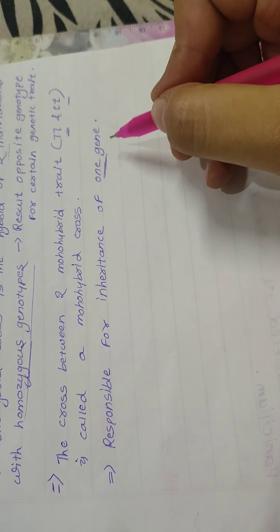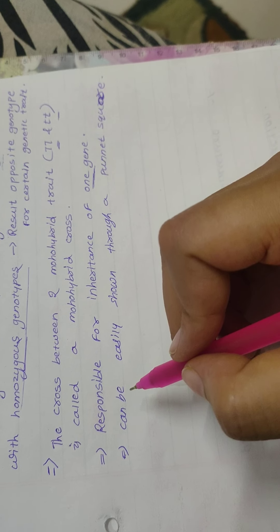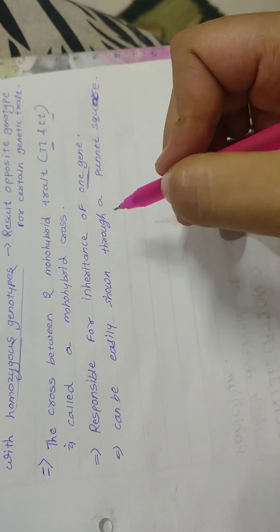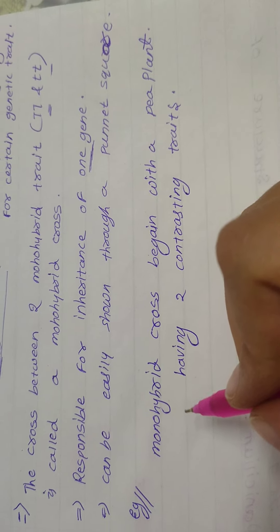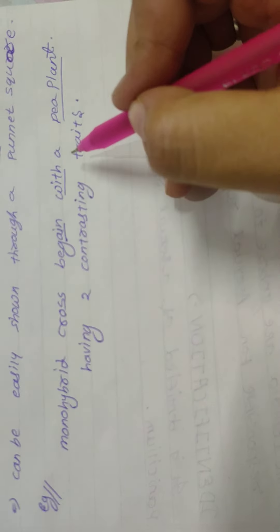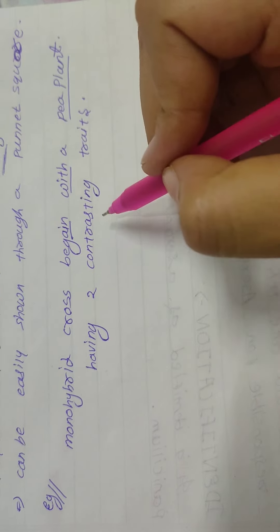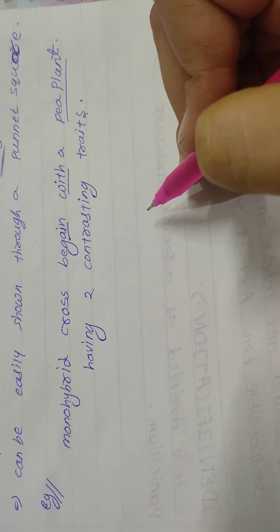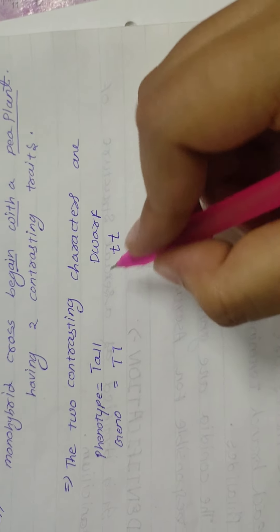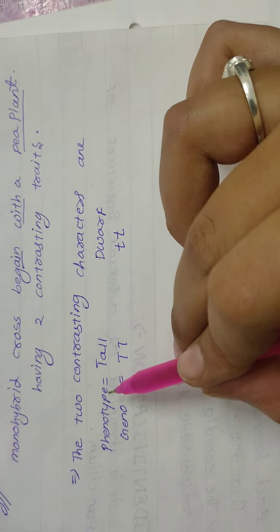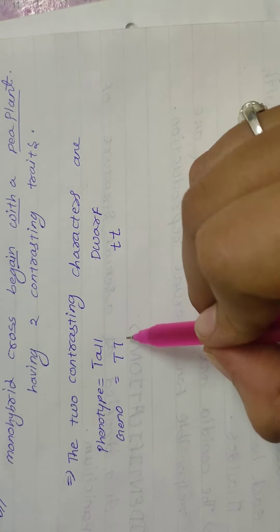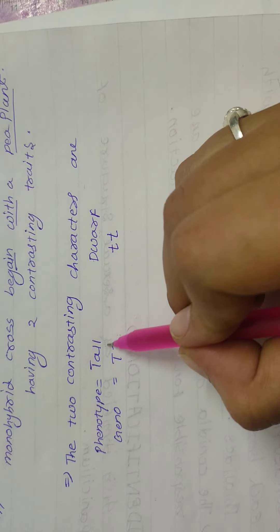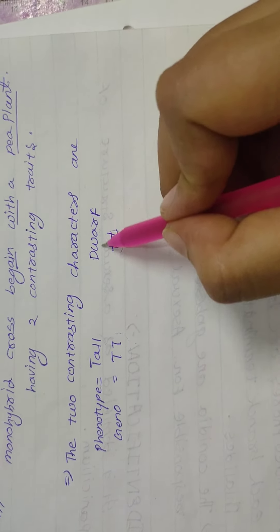This can be easily shown through a Punnett square. Here we will take an example. The monohybrid cross begins with a pea plant having two contrasting characters. The two contrasting characters are: in phenotype it is tall and dwarf, and in genotype it is tall denoted as capital T capital T and dwarf as small t small t.